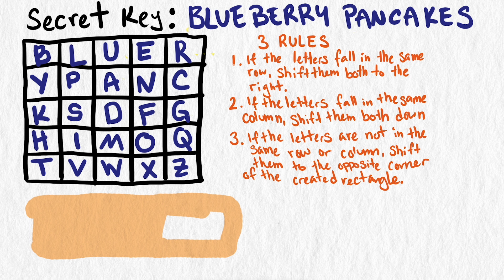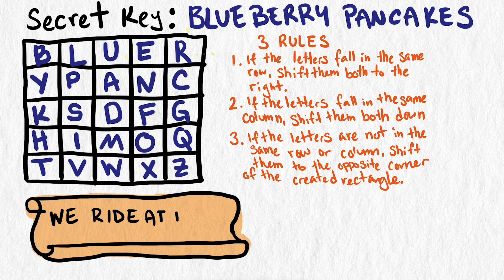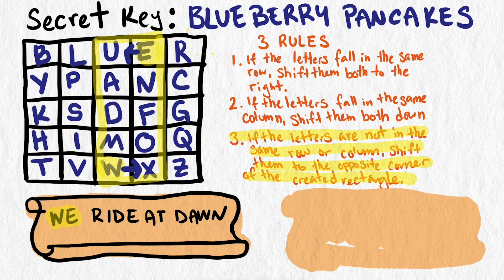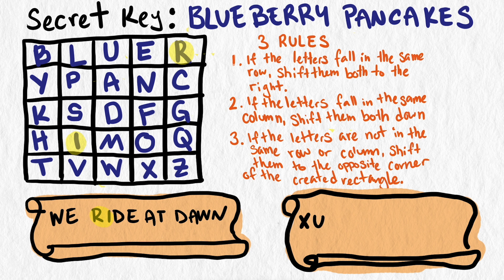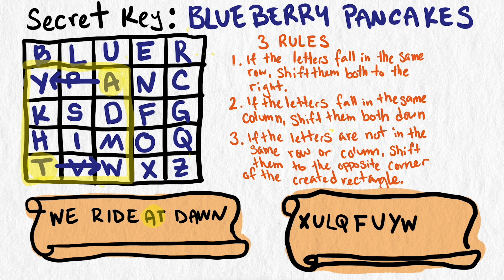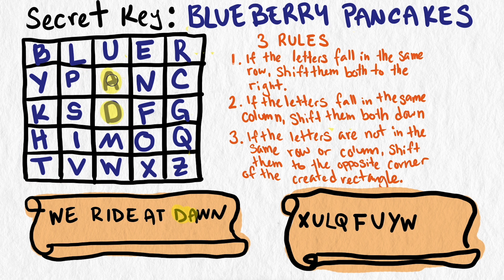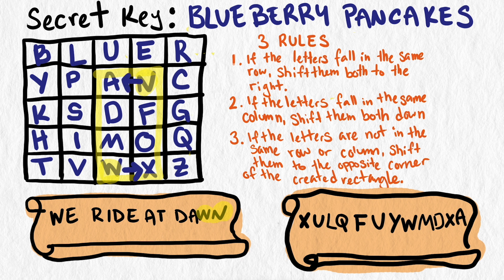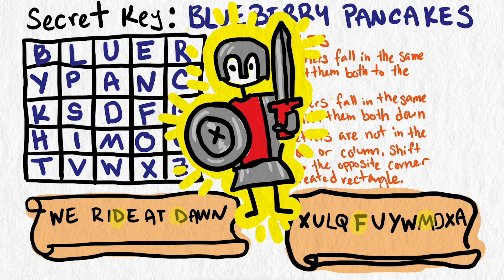Let's look at an example. Suppose the secret communication is "We ride at dawn." We consider the letters W and E first — they form a skinny rectangle, and W is sent to X while E is sent to U. R and I also form a rectangle, and R is sent to L while I is sent to Q. The rectangle made by D and E sends D to F and E to U, and the one made by A and T sends A to Y and T to W. D and A fall in the same column, so D is shifted down to M and A to D. Finally, W and N is sent to X and A. Notice how D was sent to F at one point, and at another it was sent to M — this is what made Playfair's cipher so revolutionary and resistant to standard frequency analysis.